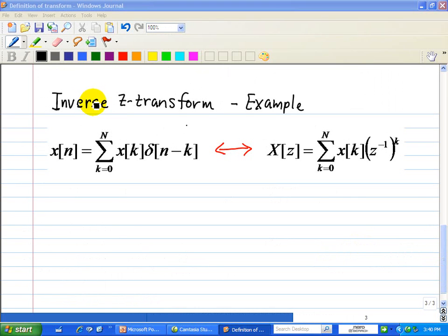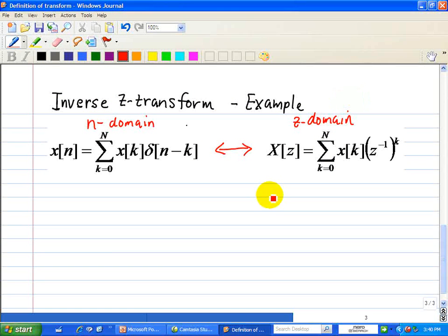Let's consider an inverse z-transform example. Here's the n-domain or time domain, and here's the z-domain. We're given the z-transform X[z] = 1 - 2z^-1 + 3z^-3 - z^-5. Hopefully you see the pattern now.